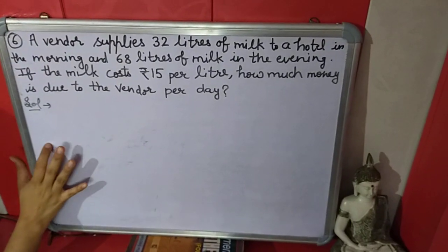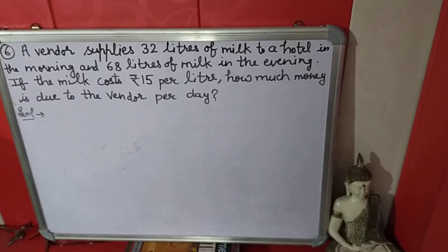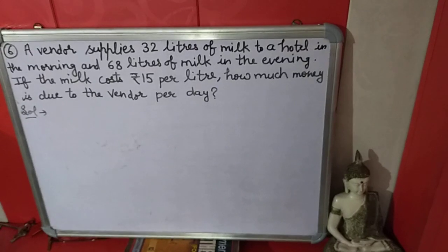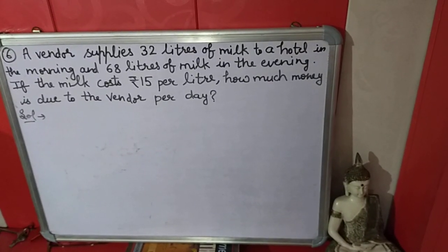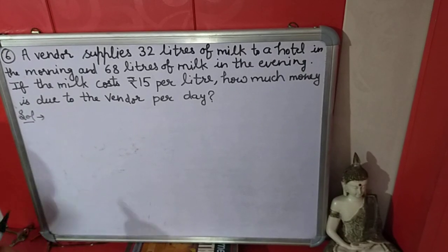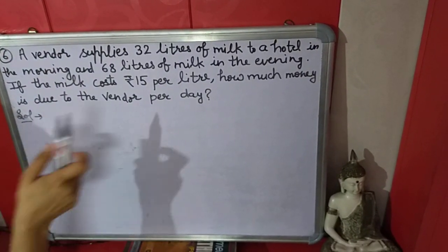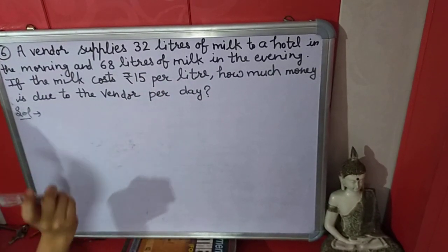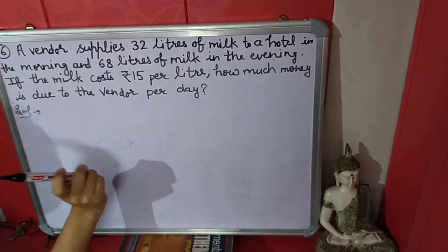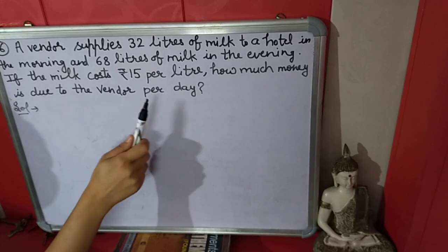A vendor supplies 32 liters of milk to a hotel in the morning and 68 liters of milk in the evening. If the milk costs 15 rupees per liter, how much money is due to the vendor per day? He is saying a vendor supplied milk to a hotel: in the morning 32 liters, in the evening 68 liters, and the cost of one liter milk is 15 rupees.